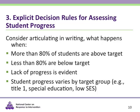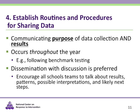The third area for establishing routines involves decision rules. This includes goal-setting procedures, changing instruction or interventions, referring students to special programs, and moving students to more or less intensive tiers. Decision rules should be established at all levels, including class, grade, and school. Fourth, you should establish routines and procedures for sharing your data. Communicate both the purpose of the data collection and the results throughout the year, for example following benchmark testing. Dissemination with discussion is preferred — encourage all school teams to talk about the results, patterns, possible interpretations, and likely next steps.